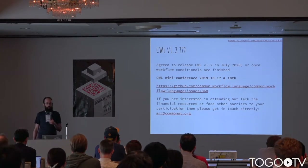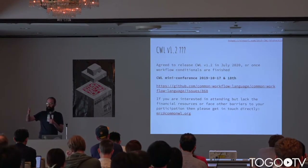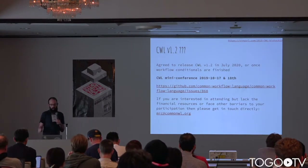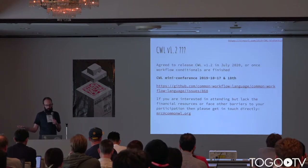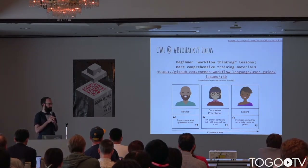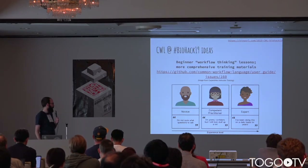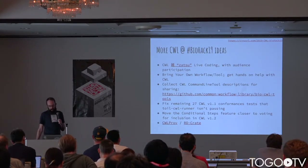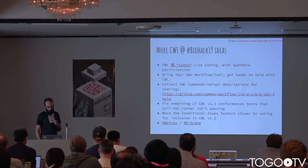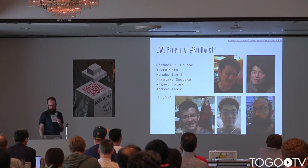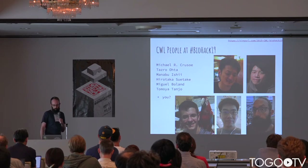What about 1.2 and 2.0? We've agreed to release 1.2 in a year or less. The big feature everybody wants is conditionals and we are working on that right now. We're happy to announce that we're having a mini conference on the 17th and 18th and we invite people to come participate in Boston, Massachusetts. We've got some great ideas to work on at the hackathon. I encourage you to click through to the slides and read about our plans for new training materials. There's going to be live coding, bring-your-own-workflow-tool sessions, more technical work, and people to help answer your questions — so maybe by the end of the week you'll become a CWL person as well.